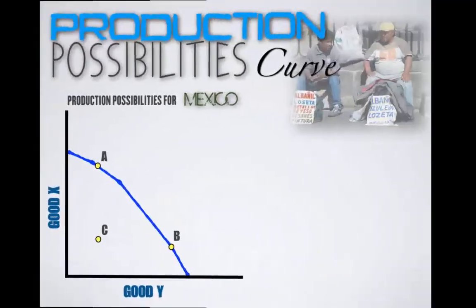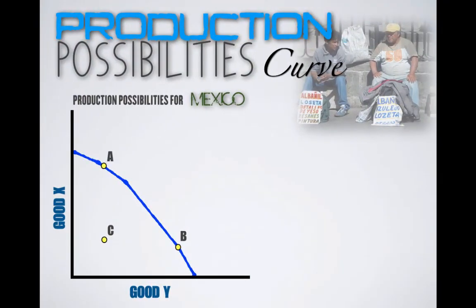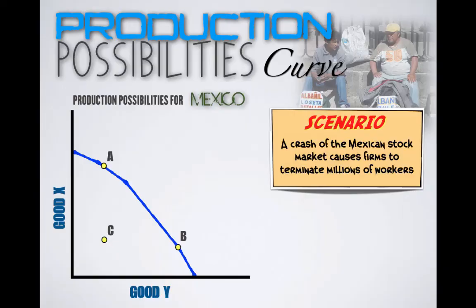Provided is the PPC for Mexico. Let's say that a crash of the Mexican stock market causes firms to terminate millions of workers. Mexico is going through an economic downturn, and if workers are losing their jobs by the millions, that means unemployment is rising. Mexican workers cannot find jobs because there are none available for them, and so their labor is going to waste. This wasted labor represents productive inefficiency, and as a result Mexico is now going to produce inside its production possibilities curve at Point C.